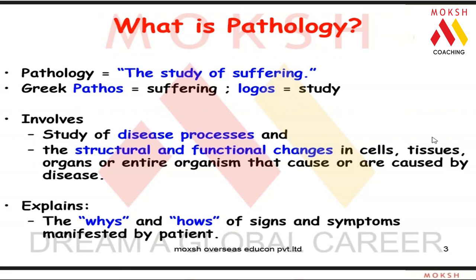In medicine we concentrate on the study of human suffering. Pathology involves the study of disease processes and the structural and functional changes in cells, tissues, organs, or the entire organism that cause or are caused by disease. A human being is a conglomeration of specialized cells doing specialized functions. Pathology explains how all the signs and symptoms manifested by the patient arise.